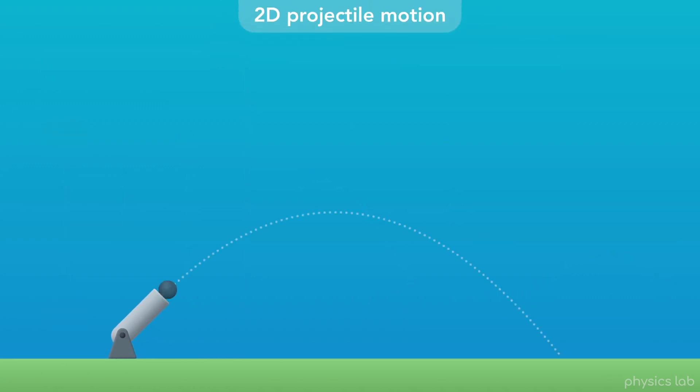Whenever an object moves sideways through the air, it's in 2D projectile motion. This shows up everywhere, especially in sports.